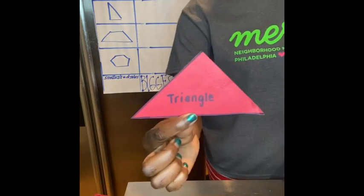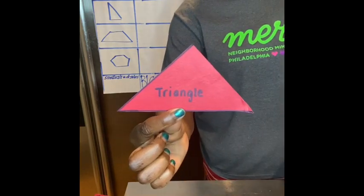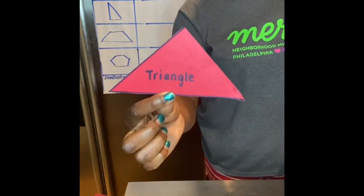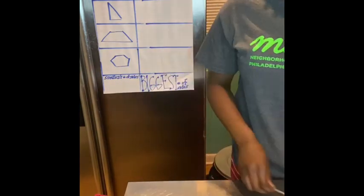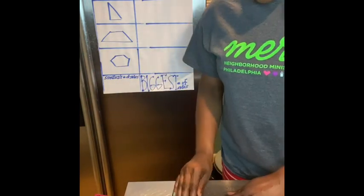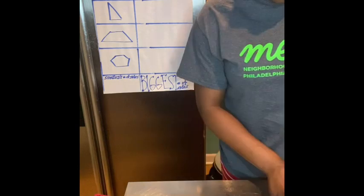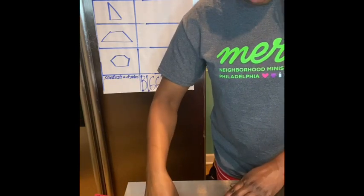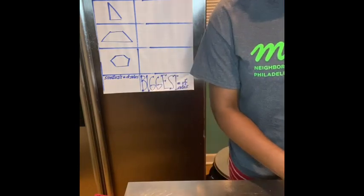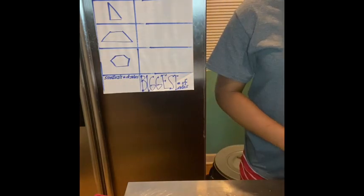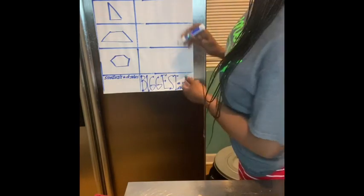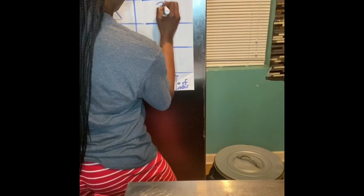All right, who's that? Three sides — it's a triangle. Let's see how many sides the triangle has. One, two, three. The triangle has three sides.